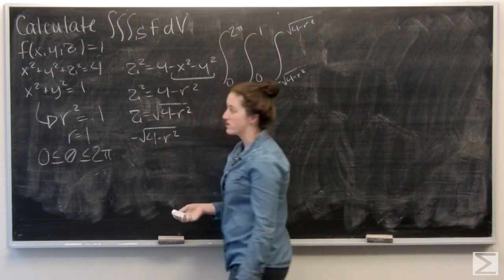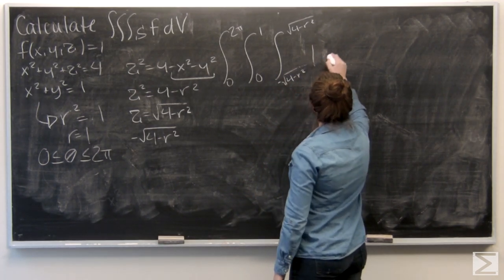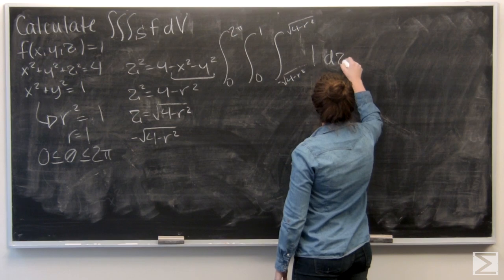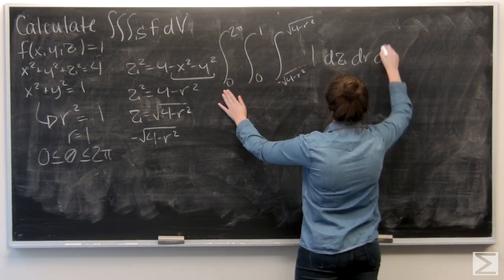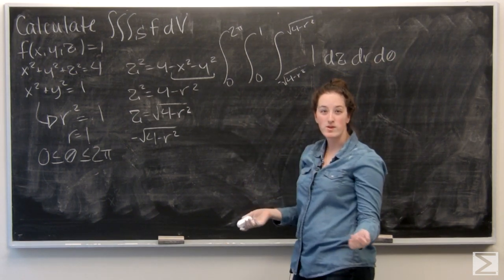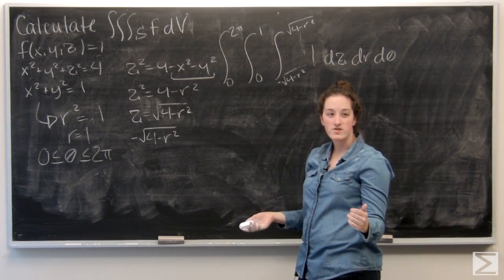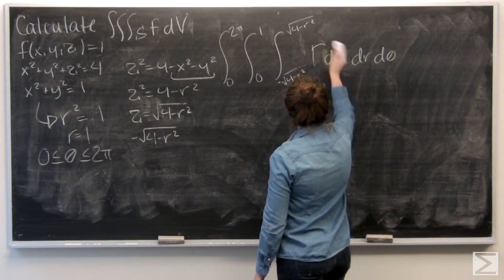And the function I'm integrating is just 1, so essentially I'm finding the volume of S. I'm doing dz, dr, d theta. And keep in mind that when we're doing integration in cylindrical coordinates, we have to add an r. So this really becomes r.